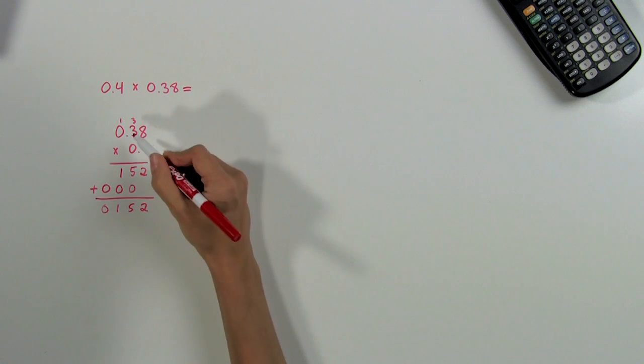The remaining question is where to put the decimal point in our answer. To figure this out, we just count the number of digits to the right of the decimal point in each part of our problem. So here we have 1, 2, and 3.